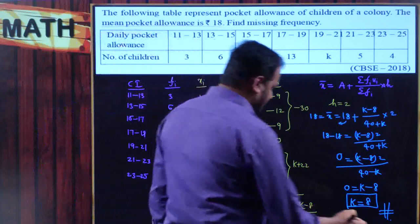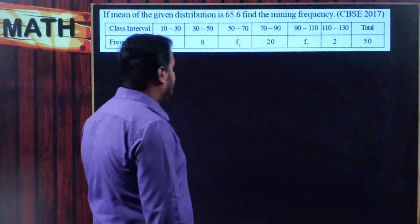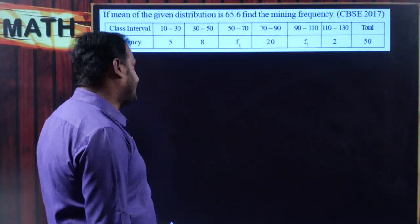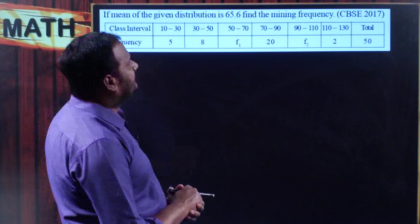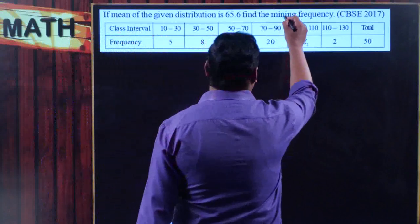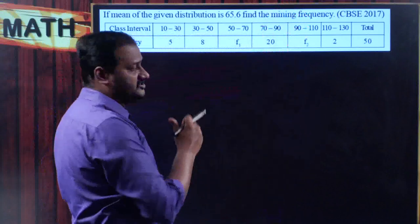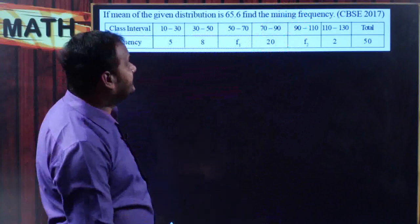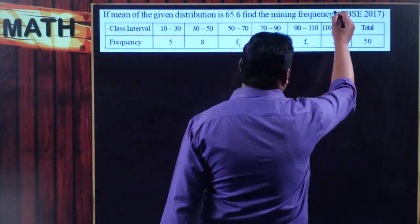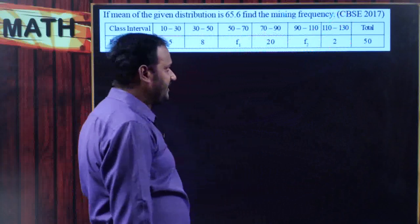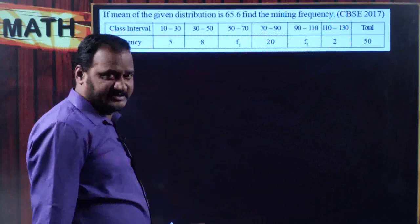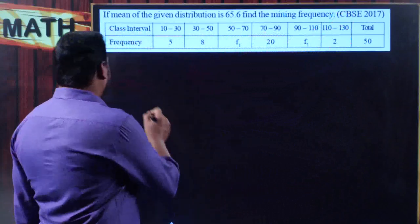This is how we find the missing frequency of a frequency distribution using arithmetic mean. Let us move on to the next problem. If the mean of the frequency distribution is 65.6, find the missing frequencies f1 and f2. I will write the information vertically.